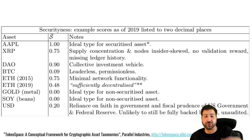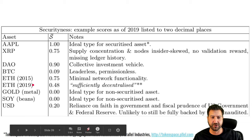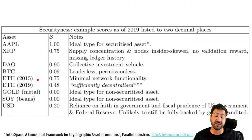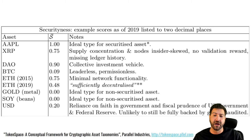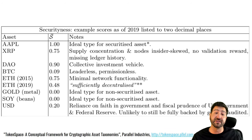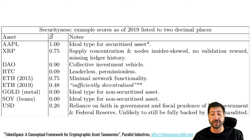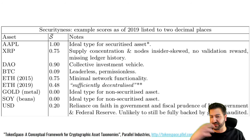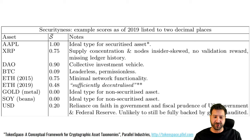One interesting thing is to look at time values — how scores can change from one time to another. That's me offering a post hoc rationalization of Hinman's sufficiently decentralized comments. Ethereum of 2019 and 2020 is a very different animal than Ethereum of 2014, 2015, and 2016. Many more people are running the software, and many developers and companies participate in the ecosystem, even though there's still a foundation and a spectre of the token sale.